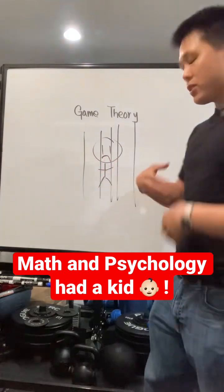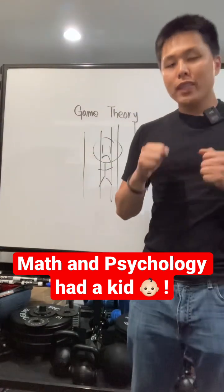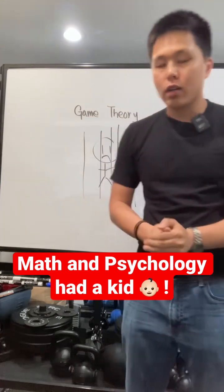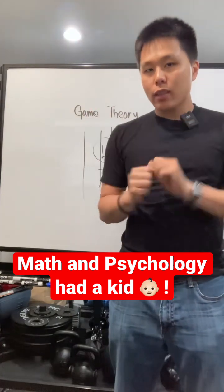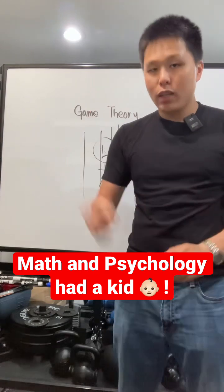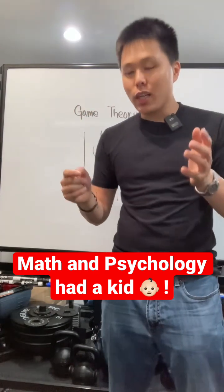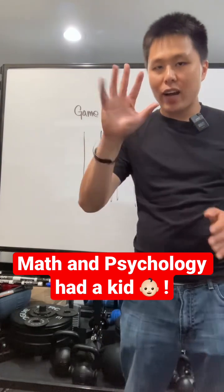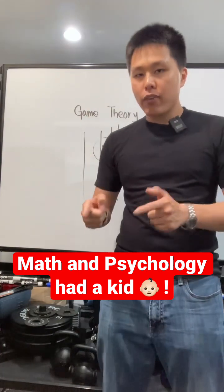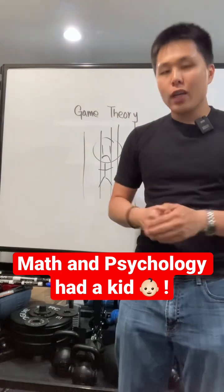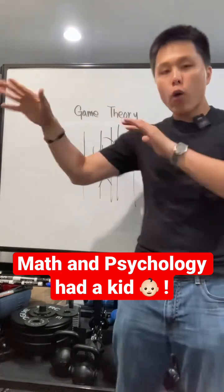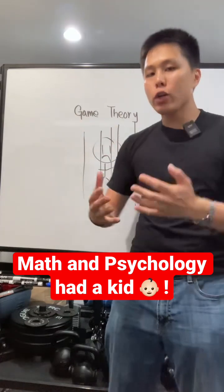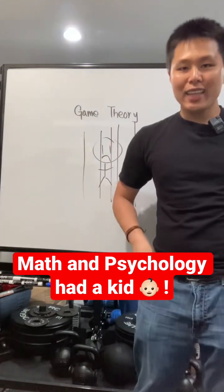A classic example is the prisoner's dilemma. You have two partners in crime — they're captured, separated, cannot talk. If they do not confess, each gets three years. If one confesses and the other doesn't, the one who confessed gets one year and the other gets five years. If they both confess, they both get two years. It's this whole study of not knowing how the other person behaves — what's the most beneficial way to interact in that situation? That's game theory.